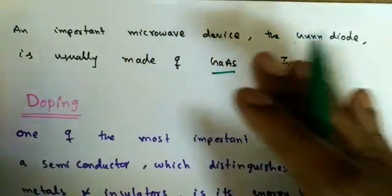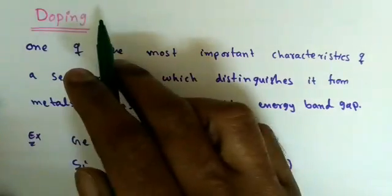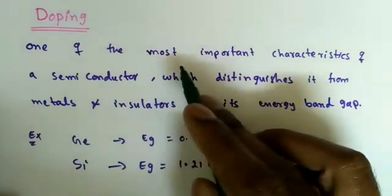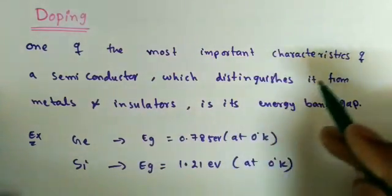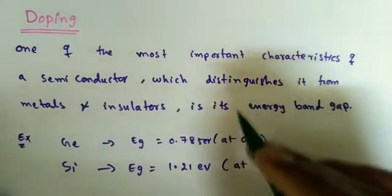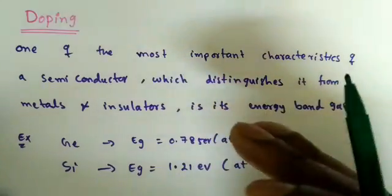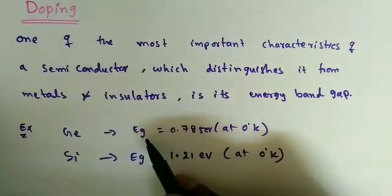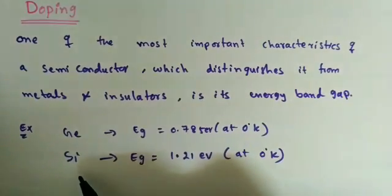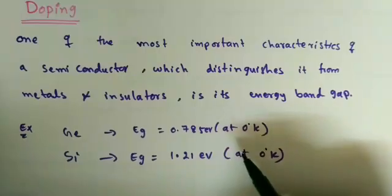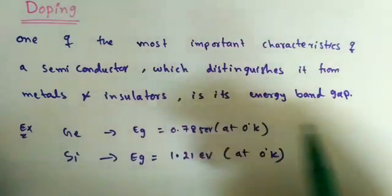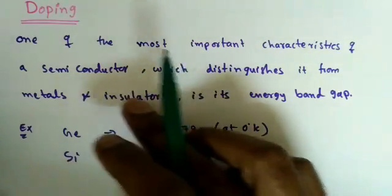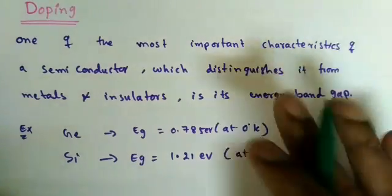An important concept called doping will be introduced. Before that, one of the most important characteristics of a semiconductor — which distinguishes it from metals and insulators — is the energy band gap. Depending on the energy band gap we can determine whether a material is a semiconductor, metal, or insulator. For germanium, the energy band gap is 0.785 eV at 0 K; for silicon it is 1.21 eV at 0 K.